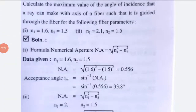Fifth example: calculate the maximum angle of incidence (acceptance angle) for a ray guided through the fiber for two cases. Case 1: N1 = 1.6, N2 = 1.5. Using NA = √(N1² − N2²) = √(1.6² − 1.5²) = √(2.56 − 2.25) = √0.31 ≈ 0.556. The acceptance angle Im = sin⁻¹(0.556) = 33.8 degrees.